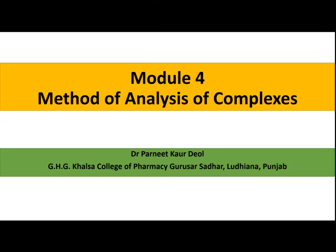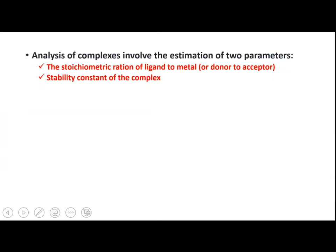Hello students, today we will be covering a very important topic of Module 4: methods of analysis of complexes. Analysis of complexes involves the estimation of two parameters. The first parameter is the stoichiometric ratio — in what ratio the ligand and metal are combining. The second important parameter is the stability constant of the complex.